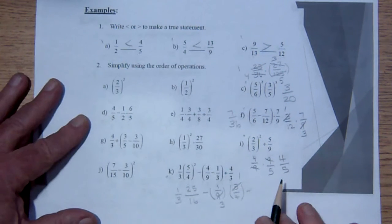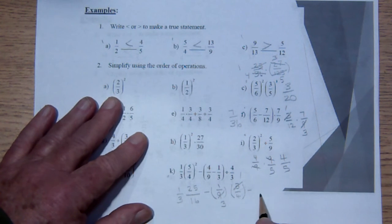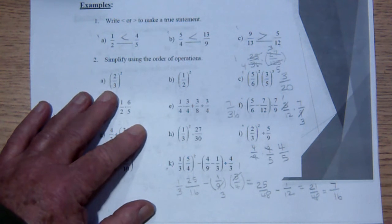So what we will have is 25 over 48 minus 1 over 12. The common denominator is going to be 48. We're going to multiply top and bottom here by 4 and that's going to be 21 over 48 or in lowest terms 16 and 3 goes into that 7 times. 7 over 16.